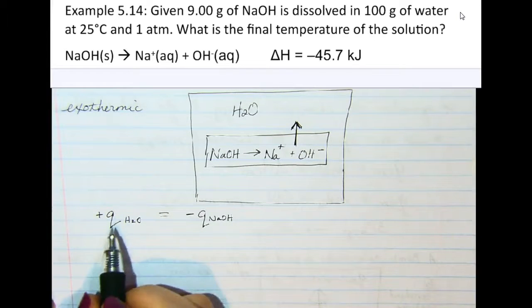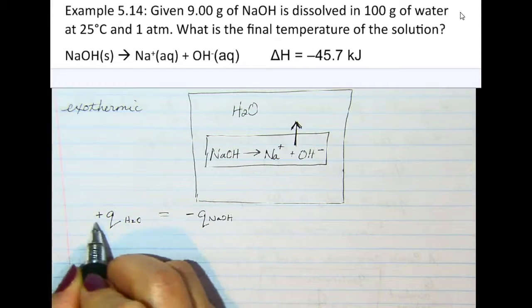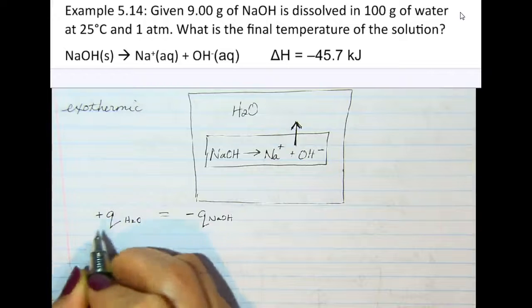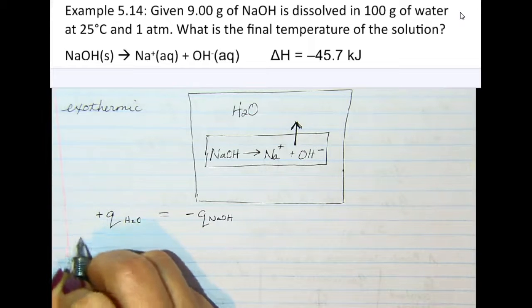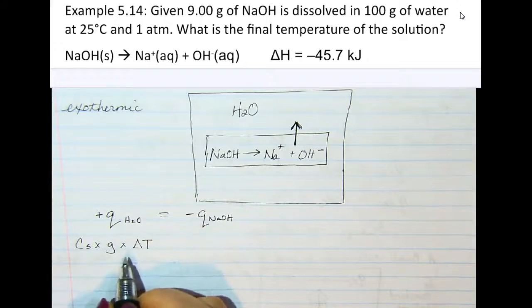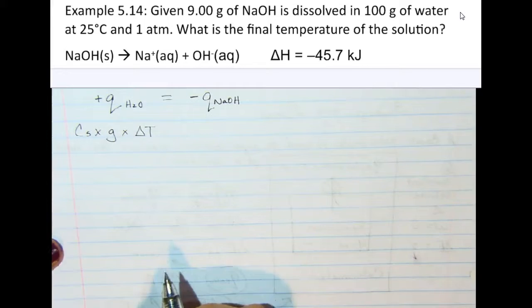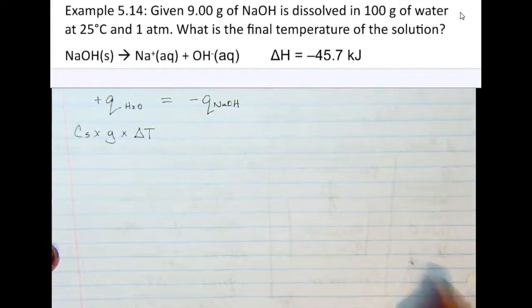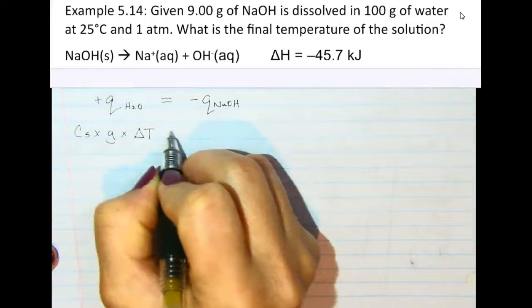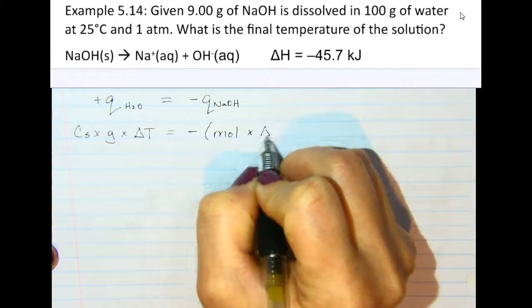So once the heat energy is released from the sodium hydroxide into the water, we want to know what's the temperature going to end up being. So we're going to take the Q of water and substitute in Cs times grams times the delta T, because this is the equation whenever there's a temperature change. And then we're going to substitute in for the breaking apart of sodium hydroxide. The Q is going to be equal to moles times the delta H.